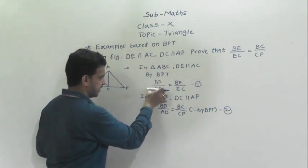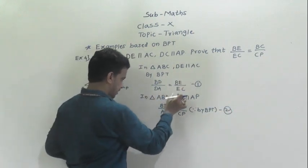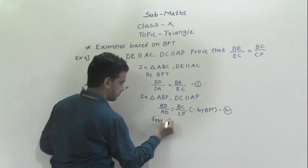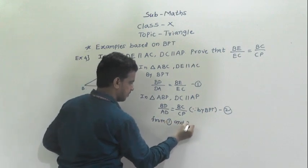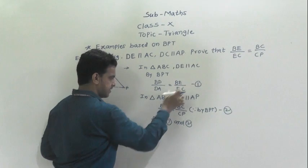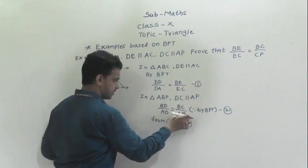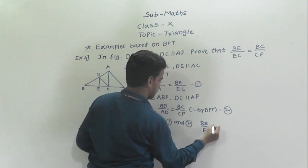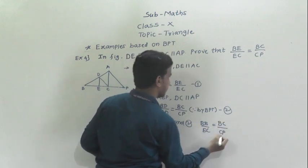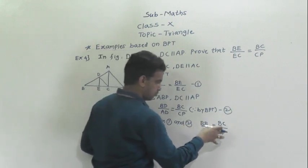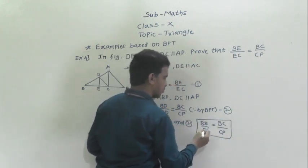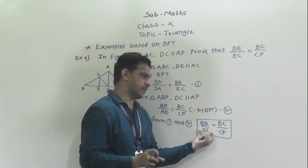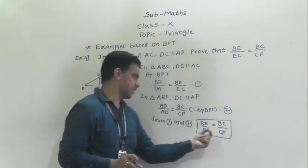From equations 1 and 2: BD by DA equals BE by EC, and BD by DA equals BC by CP. Therefore BE by EC is equal to BC by CP. So we have proved that BE by EC is equal to BC by CP. The key approach is to identify which line is parallel to which side, then take the appropriate triangle and apply BPT.